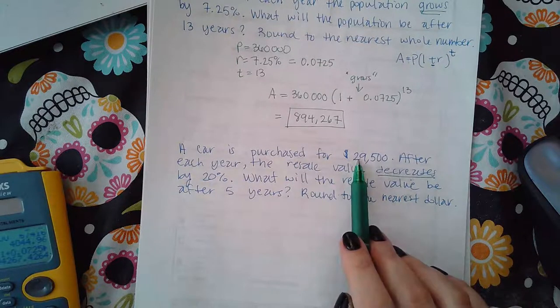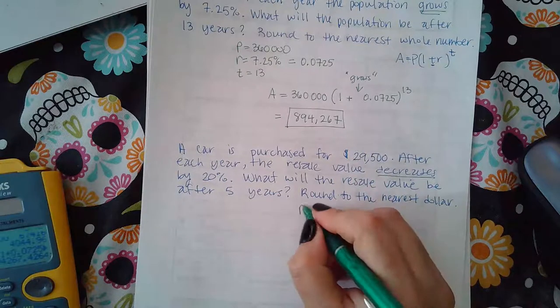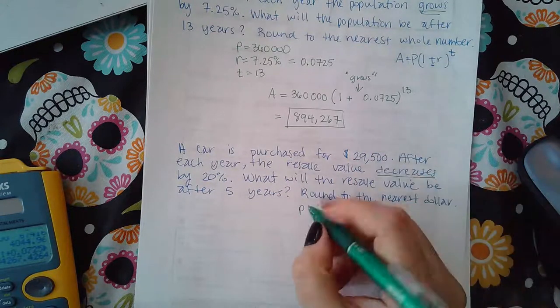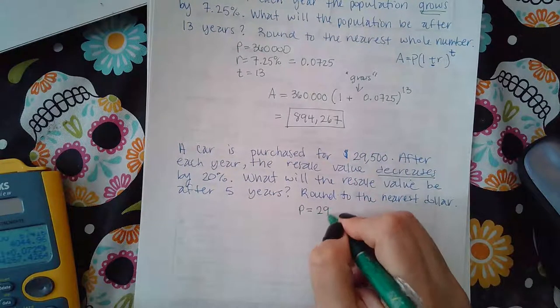So, when I purchased it, it was this. So that would be the amount, the value that you're starting at, right? So that means it's going to be P.